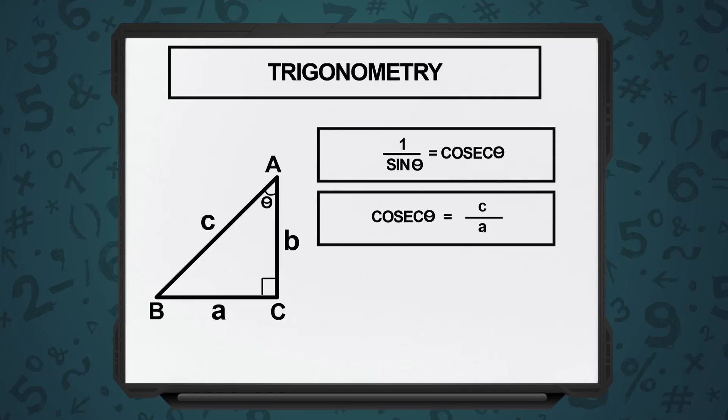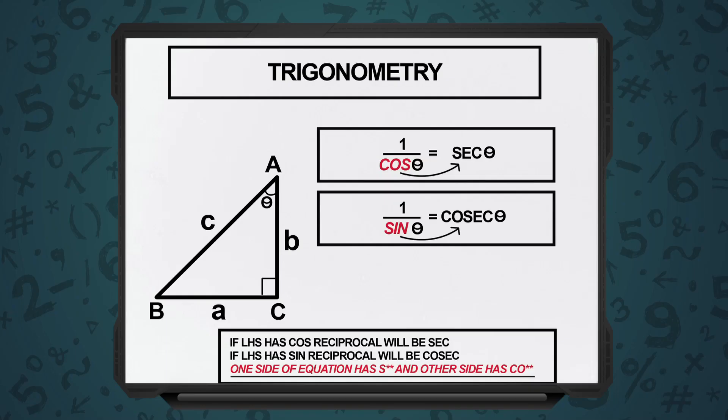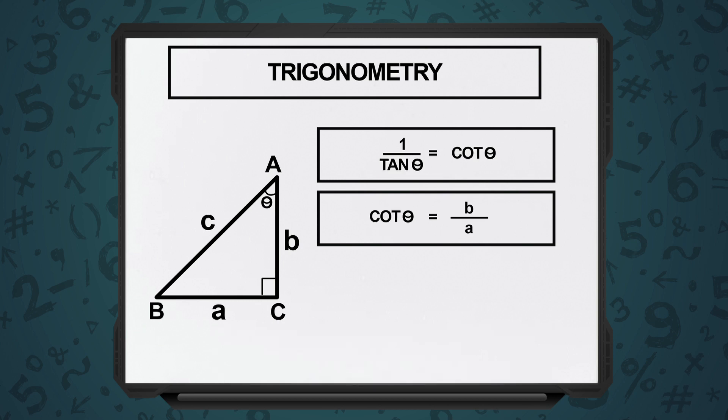Sine starts with 'si' and cosine starts with 'co'. So, the reciprocal of sin theta — 1 upon sin theta — is equal to cosec theta, and 1 upon cosec theta is equal to sin theta. If it is sine, the reciprocal will be cosec. If it is cosine, the reciprocal will be sec. And 1 upon tan theta is equal to cot theta.